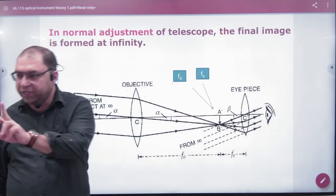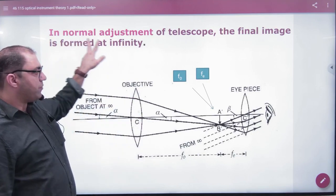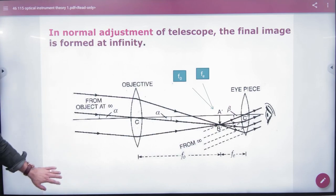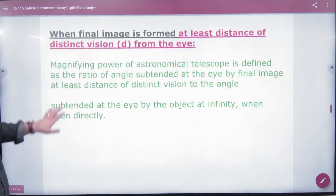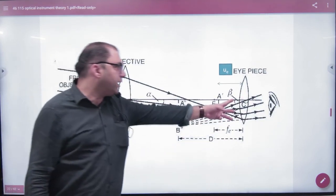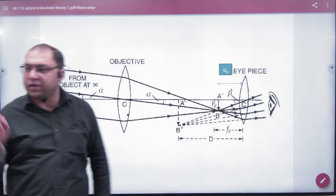Astronomical telescope will come from two ways. First, normal adjustment. What is normal adjustment? When image is formed at infinity. And another case will come when image is formed at least distance of distant vision, or where image will be made at finite distance. It is called least distance of distinct vision.